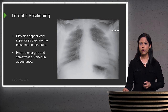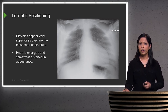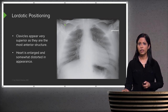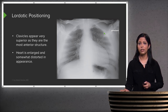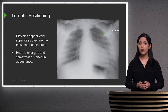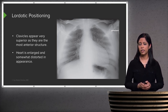This is an actual x-ray in the lordotic position. You can see the clavicles appear very superior because they are the most anterior structure — located way up here rather than in their normal anatomic position. The heart also appears enlarged and somewhat distorted in appearance, again because of this positioning.